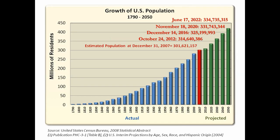US population snapshots: we passed 300 million around 2007. As of June 17, 2022, we were at 334,735,315. The US is not displaying exponential growth — it is a slow growth country because we're in the post-industrial stage. The overall global population is growing exponentially, but we are not. We'll discuss differences between rapid, slow, zero, and negative growth shortly.